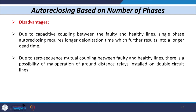The disadvantages of single phase auto reclosing include: due to capacitive coupling between faulty and healthy lines, single phase auto reclosing requires a longer deionization time, resulting in a longer dead time. Additionally, due to zero sequence mutual coupling between conductors, there is a possibility of mal-operation of the ground distance relay, particularly when used for double circuit lines where six conductors emanate from one bus.